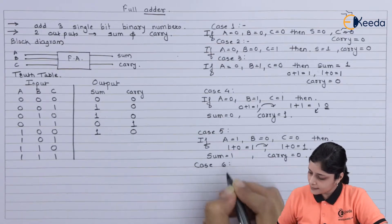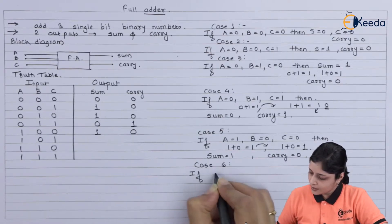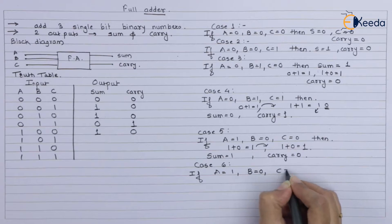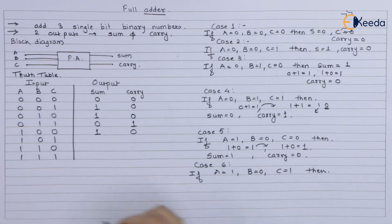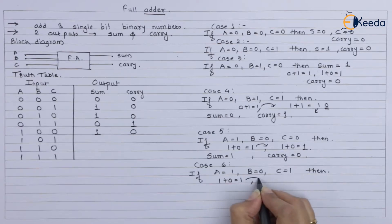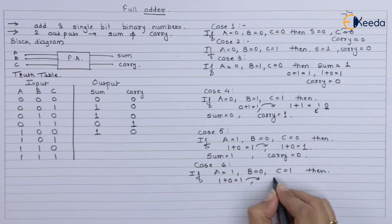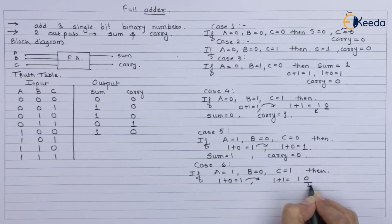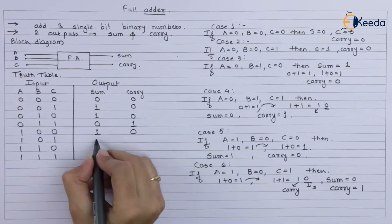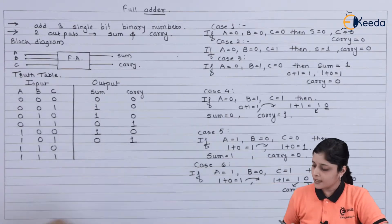Case 6: if A equals 1, B equals 0, and C equals 1, then by binary addition 1 plus 0 is 1, consider that 1 for further process: 1 plus 1 is 10, so sum is 0 and carry is 1. We get sum equals 0 and carry equals 1.